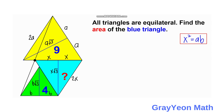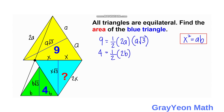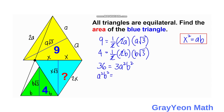Next, we consider the area of the yellow triangle and the green triangle. For yellow: 9 equals one half times the base 2A times the height A square root of 3. For green: 4 equals one half times the base 2B times the height B square root of 3. We can cancel the one half and 2 in both equations. If we multiply these two equations, we have 36 equals 3 times A squared times B squared, so A squared B squared equals 36 over 3, which is 12.